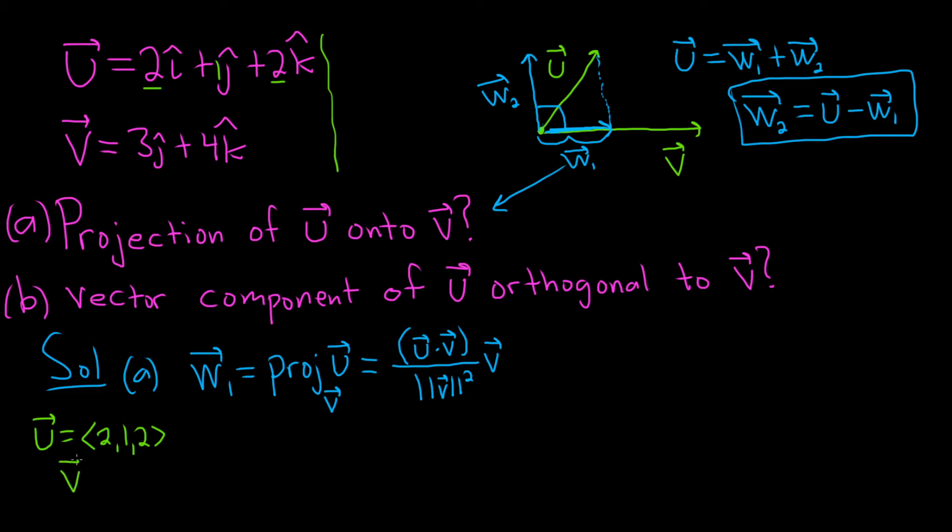And then v, there's an i hat missing here. It's really 0 i hat. I almost missed that. So it'll be 0, 3, 4.